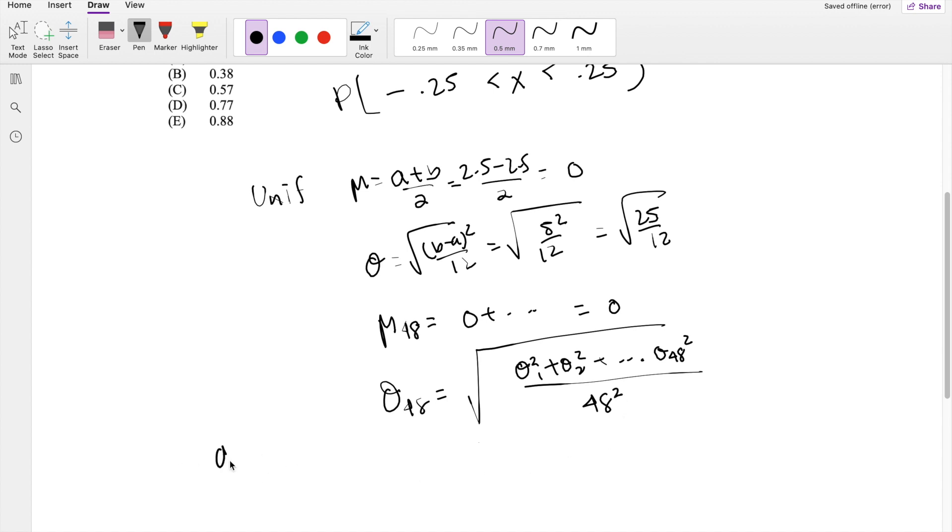Because remember, when we take averages, we basically just add up like A plus B plus C, and you just divide by that N. So it's the same idea here, you just have to divide by that N to get the average.